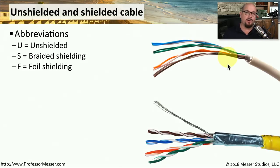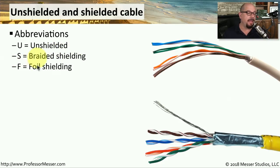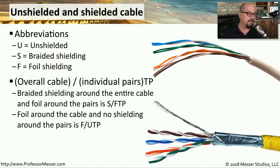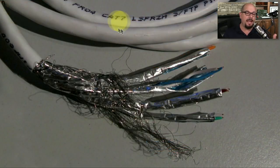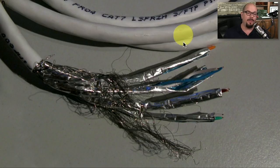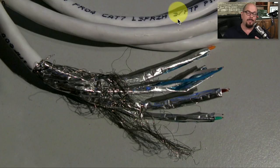It's difficult to know whether you're using UTP or STP just by looking at the outside of the cable, but there's usually some printing on the outside to help. If you see a U, it's unshielded twisted pair; if you see an S, it's braided shielding; and if you see an F, it is a foil shield. There is a letter identifying the shielding for the overall cable and a separate letter for the individual pairs. For example, foil around the cable itself but no shielding on the individual pairs would be labeled F/UTP. A category 7 cable labeled S/FTP means there is a braided shield around all the wires, and each pair of wires also has a foil shield around it.